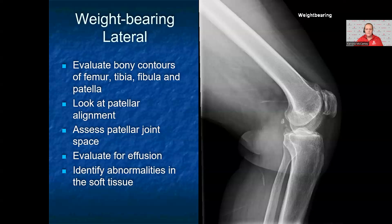Finally, look at the soft tissues for any abnormalities. For this x-ray, the patient has sclerosis and degenerative changes of the patellofemoral joint. There are also loose bodies in the posterior joint, and the patient has an effusion. The effusion is the black layer seen anterior and posterior to the femur.